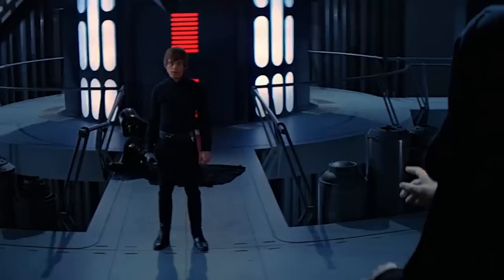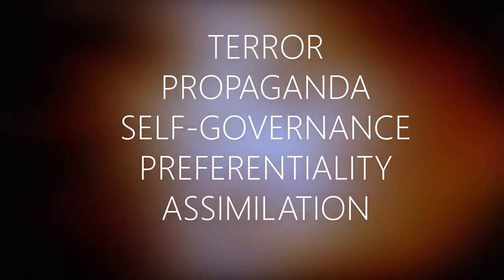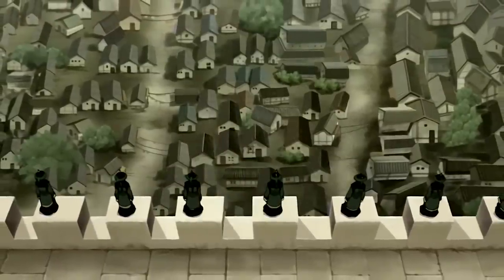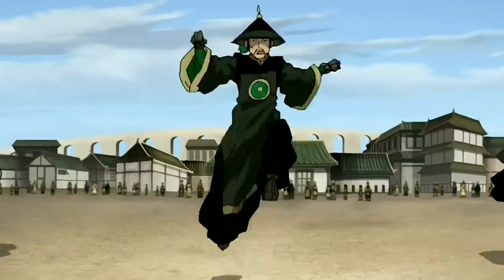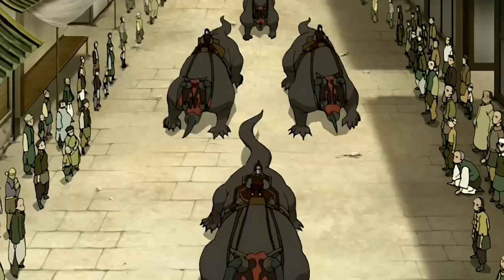Maintaining control of citizens is vital for the survival of any empire. An empire doesn't just fall because it loses its emperor — it falls because it loses the methods of control: terror, propaganda, self-governance, preferentiality, and assimilation, as well as a number of other things. Losing those means losing taxes, resources, commerce, members of the military, coordination, and the ability to easily move forces through a given region, and it's that that causes the downfall of an empire.